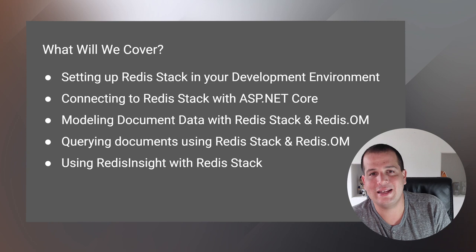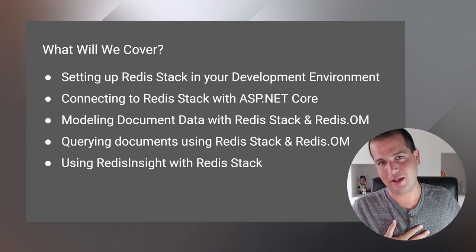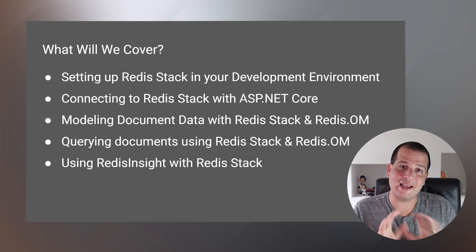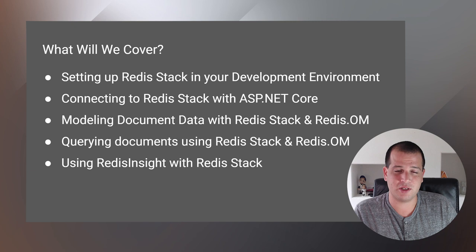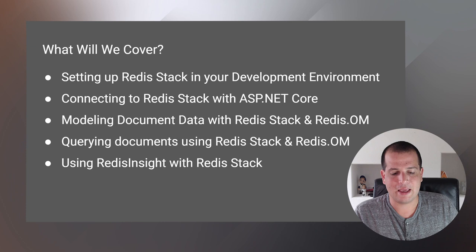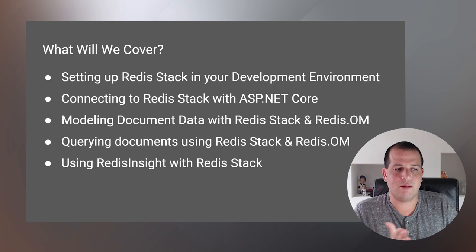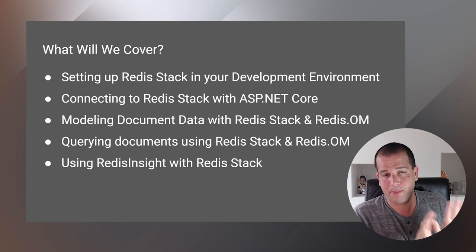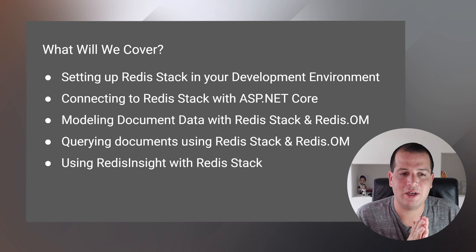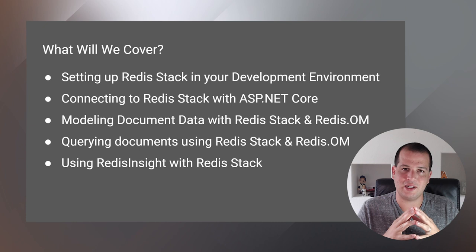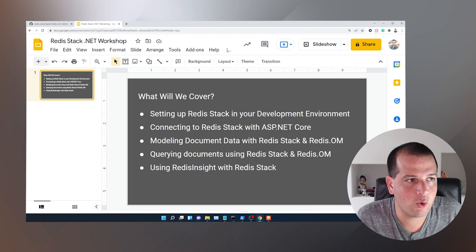Before we get started, let me just go over what we're going to be covering today. First up, we're going to be covering how to set up Redis Stack in your development environment. I'm a Windows developer, so I'm going to be setting this up in Windows. Next, we'll talk about how to connect to Redis Stack from an ASP.NET Core application — a simple web API for modeling a person data structure — to get Redis Stack integrated with your app. Then we're going to be modeling our document data with Redis Stack and a library called Redis OM. We'll also be learning how to query documents from Redis Stack with Redis OM, and finally how to use Redis Insights, which is a graphical user interface for Redis Stack.